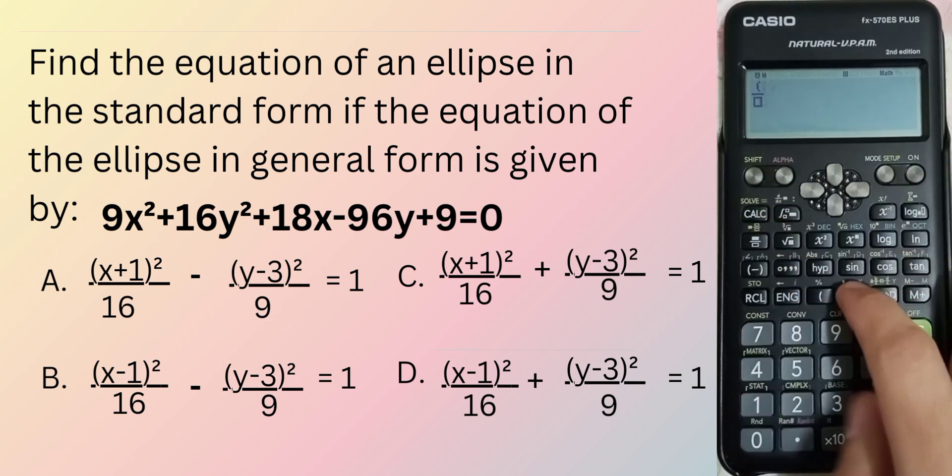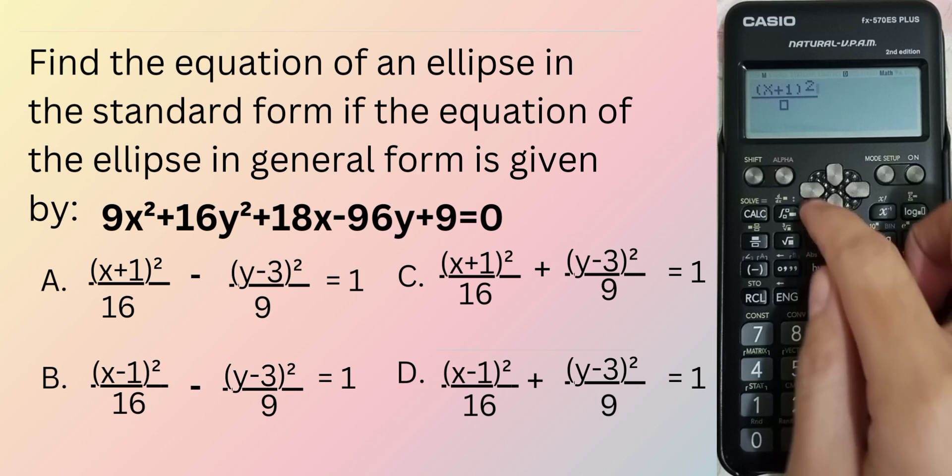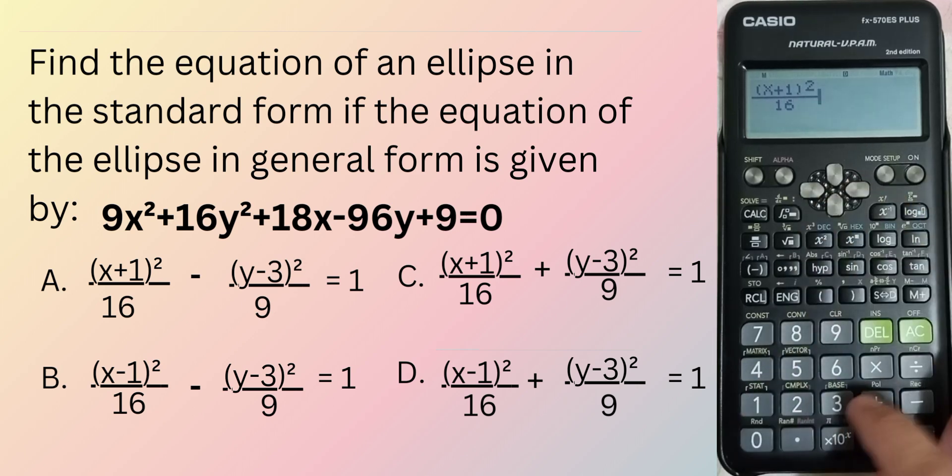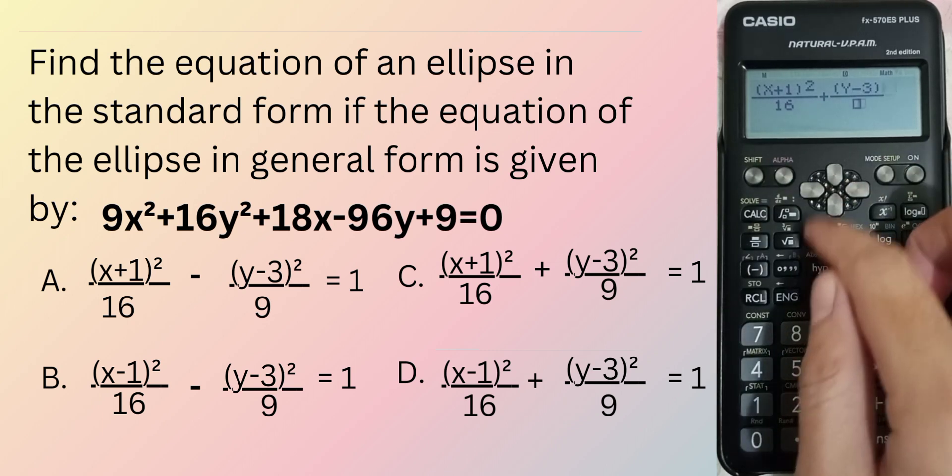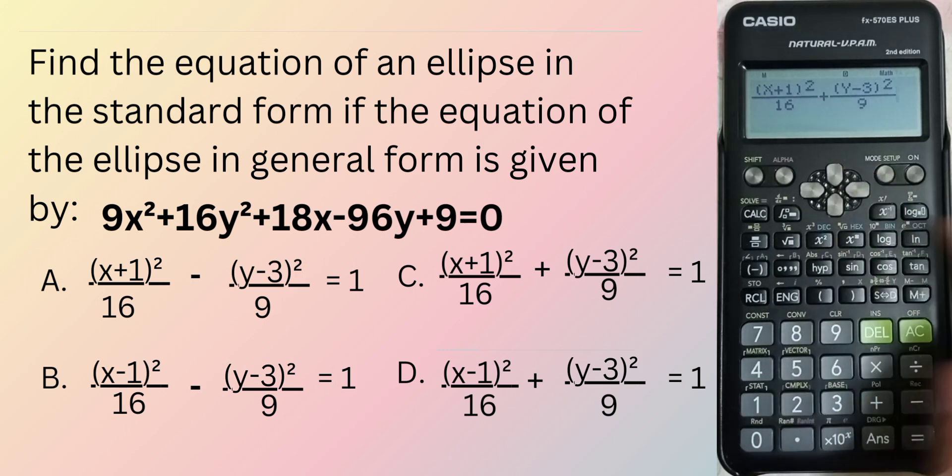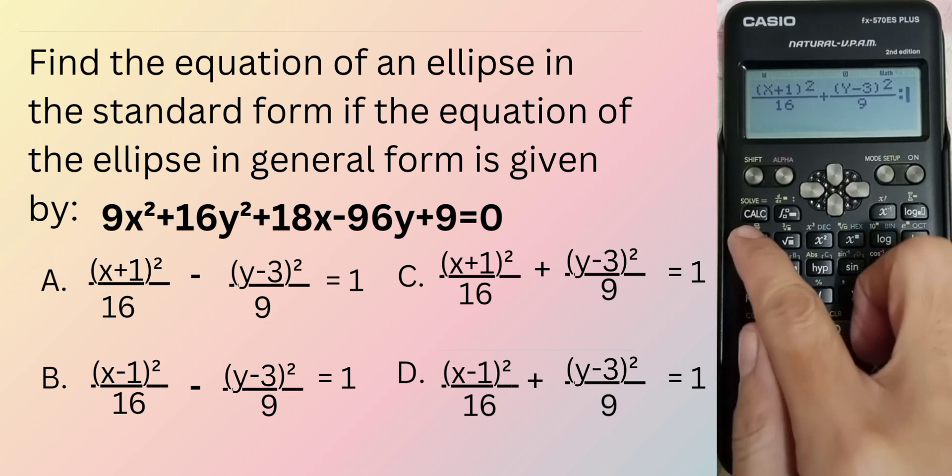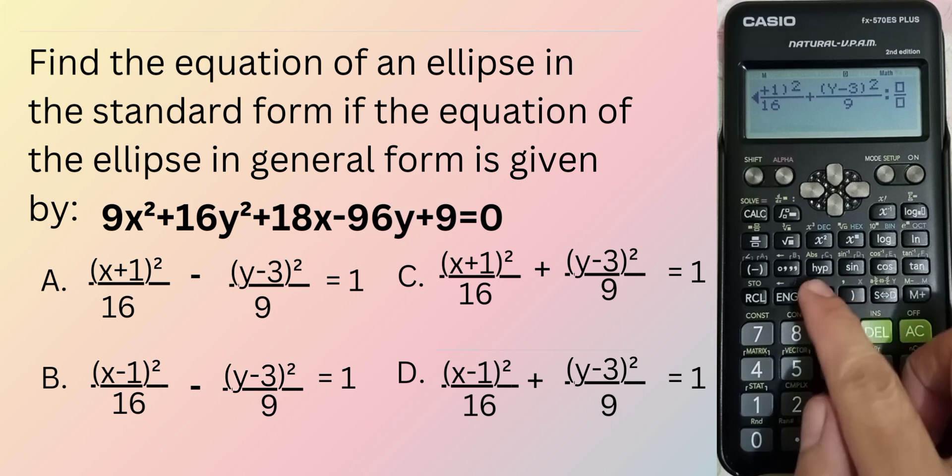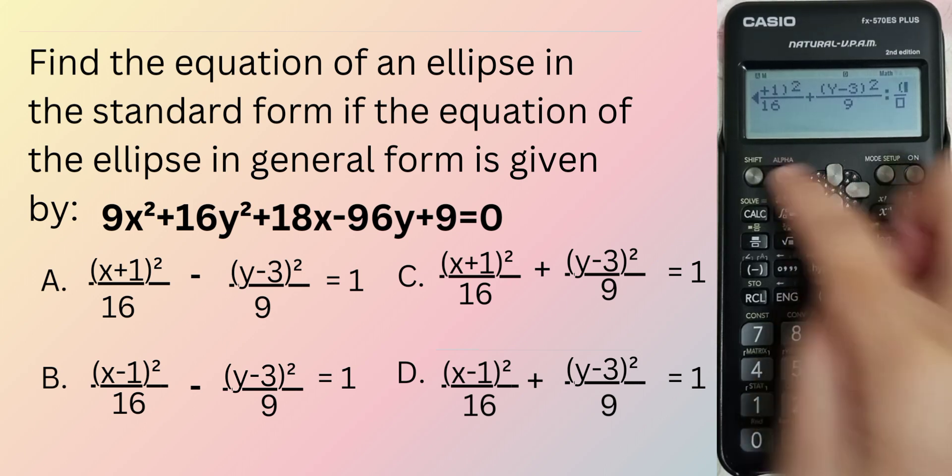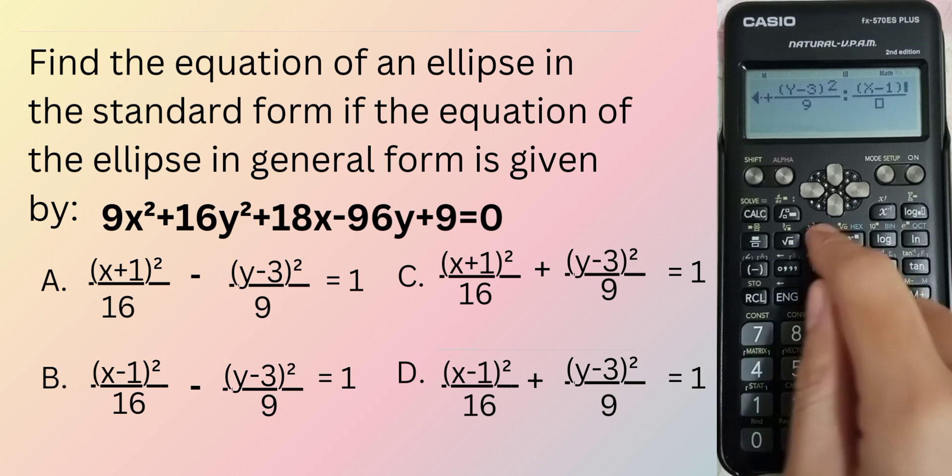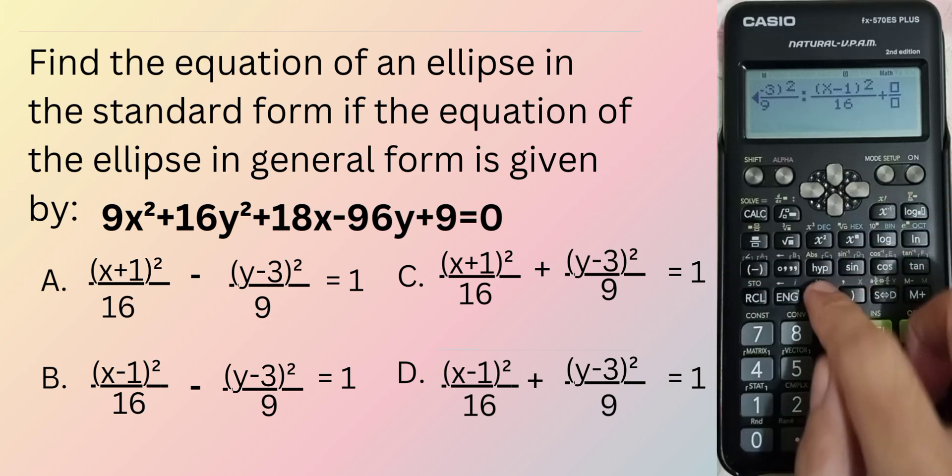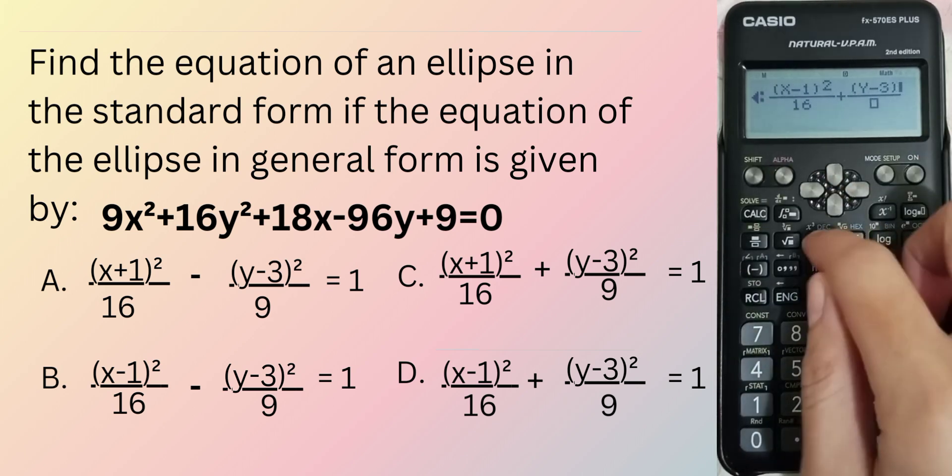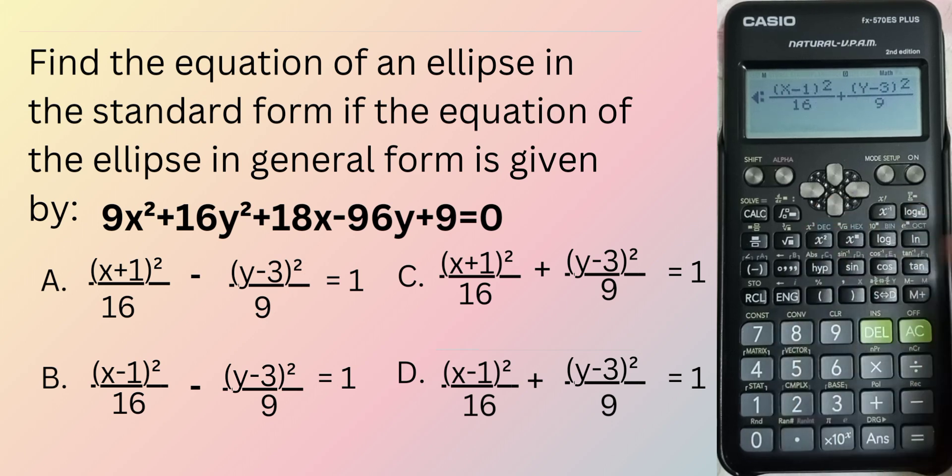Option C, x plus 1 squared over 16 plus y minus 3 squared over 9 is equal to 1. Hindi na po natin kailangan ilagay yung equal to 1 kasi yun yung magiging basis natin kung alin ang tama, kung alin ang sagot. Then, D, x plus 1, x minus 1, rather, squared over 16 plus y minus 3 squared over 9 is equal to 1.